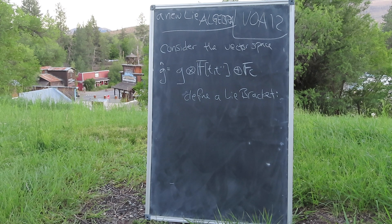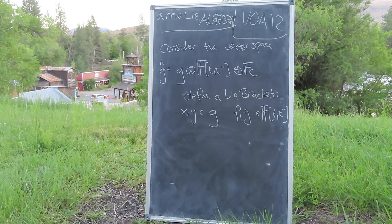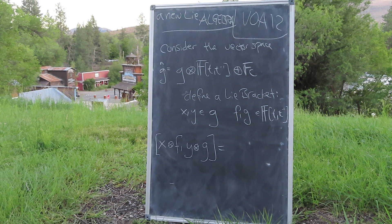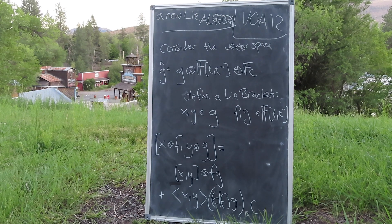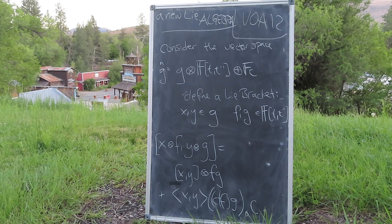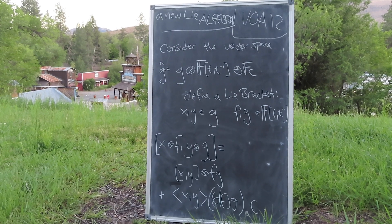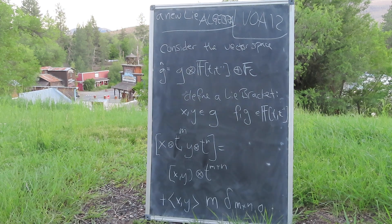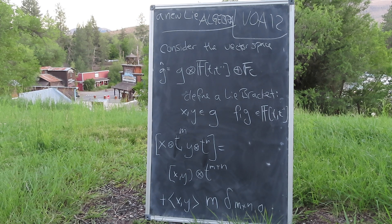We can define a Lie bracket on G-hat as follows. C, being the central charge, commutes with everything. So for X and Y in the Lie algebra G and Laurent polynomials F and G, the bracket of X times F with Y times G will equal the Lie algebra bracket of X with Y times FG, plus a term proportional to the central charge, which also uses the inner product on G. If this formulation is too opaque, we can be more explicit about the grading by looking at the monomials specifically, wherein the central term now employs the Kronecker delta, which is non-vanishing only if M plus N equals zero.